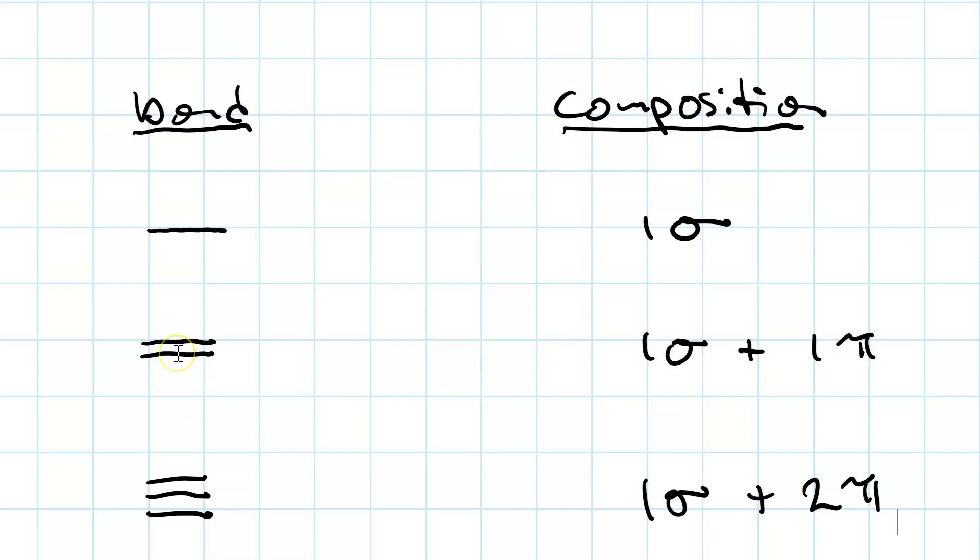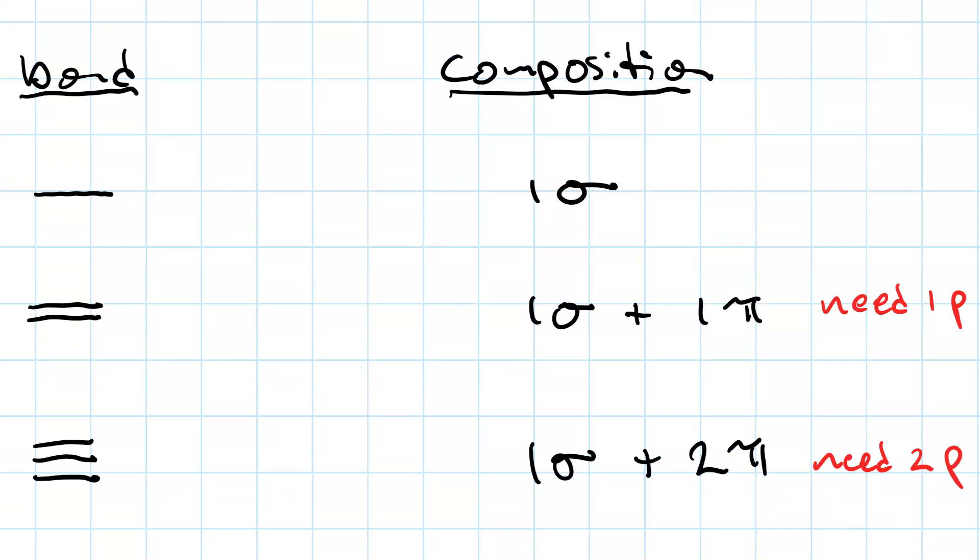The pi bond is always formed from unhybridized p orbitals. So, to have a double bond, the atoms involved have to have one unhybridized p orbital. To have a triple bond, the atoms involved have to have two unhybridized p orbitals.